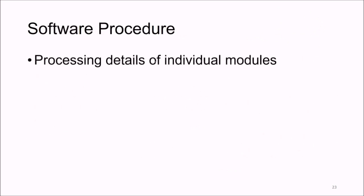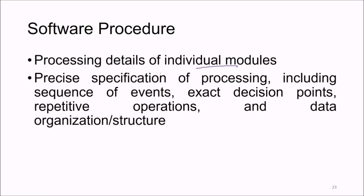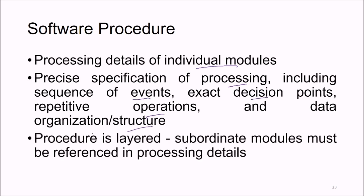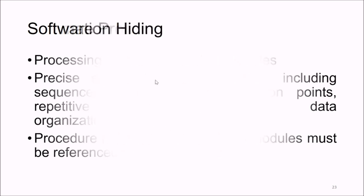Software procedure covers the processing details of individual modules. It includes precise specification of processing: the sequence of events, exact decision points, repetitive operations, and data organization structure. Procedure is layered, meaning subordinate modules must be referenced in processing more details.